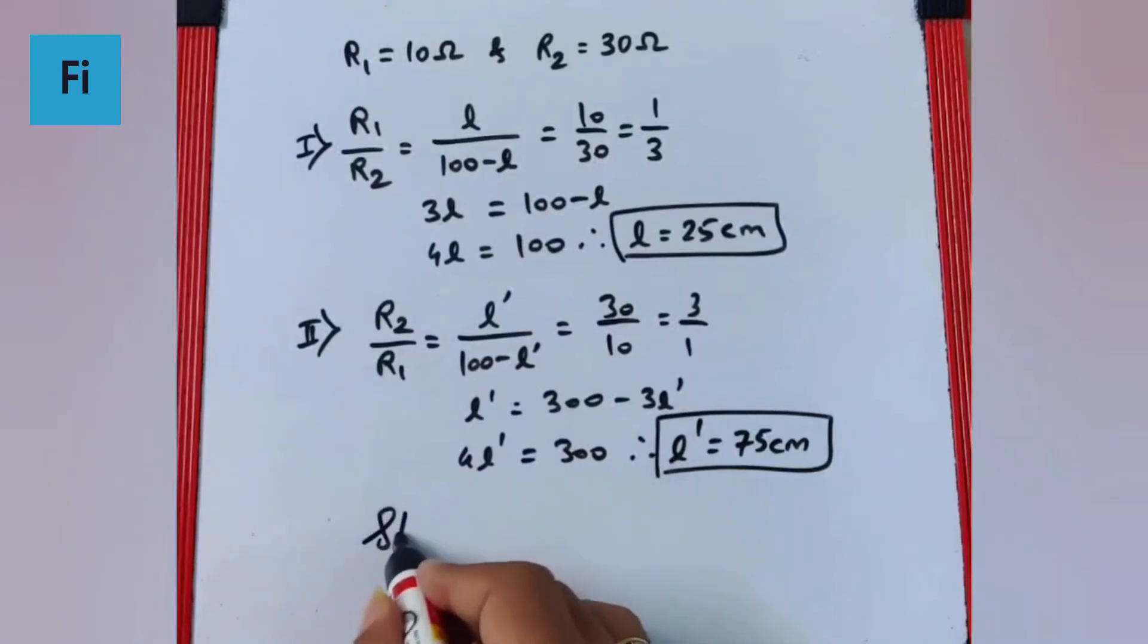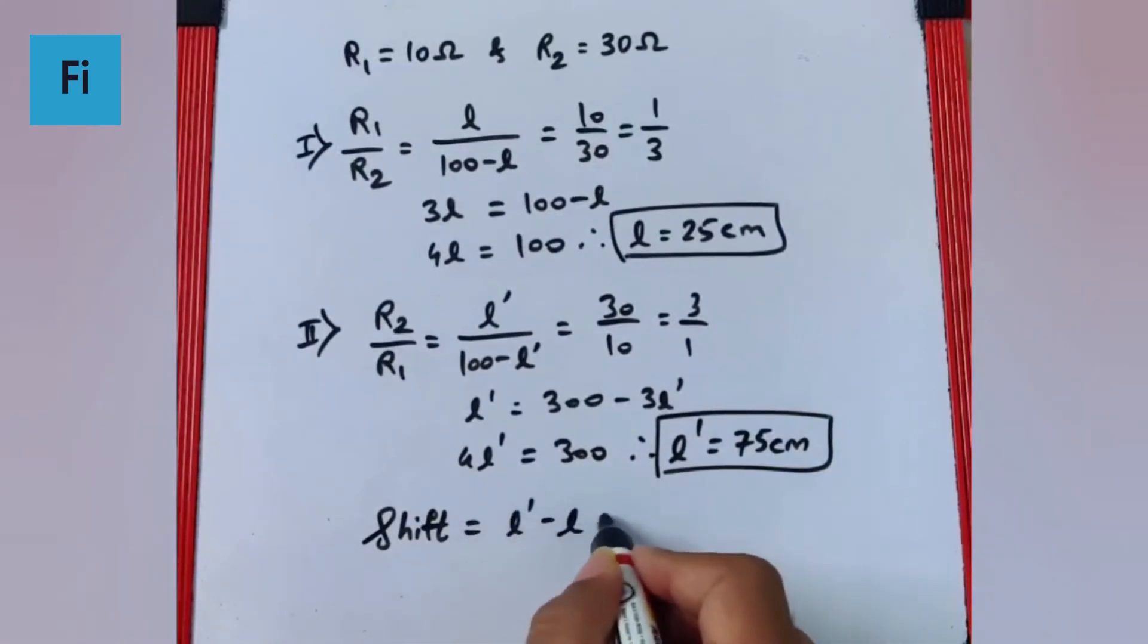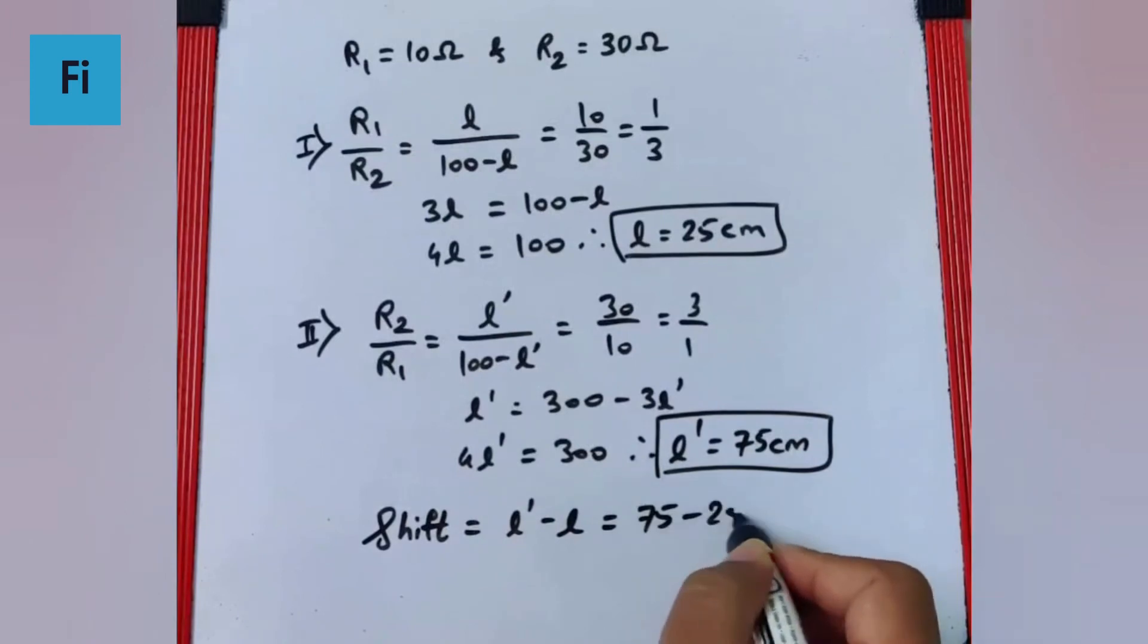So I can say very clearly the shift is l dash minus l, which is 75 minus 25, which is 50 centimeter.